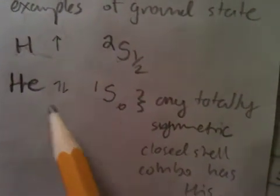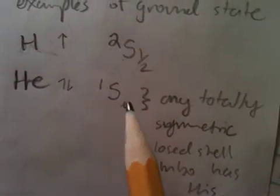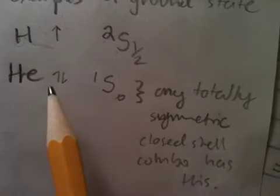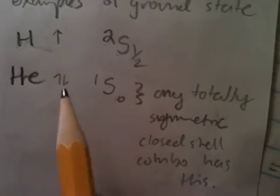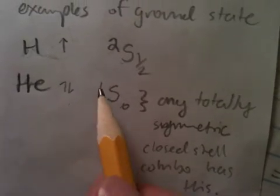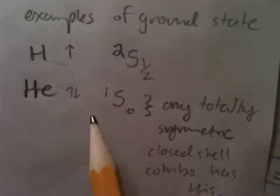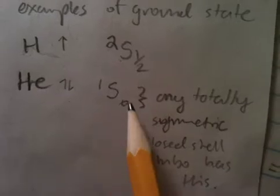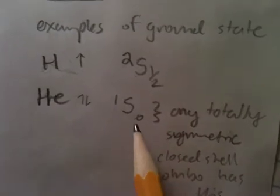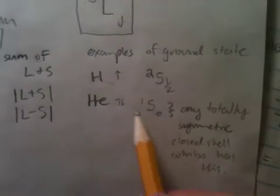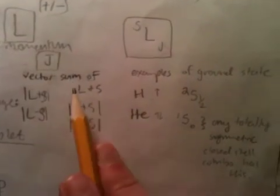Because you do L plus S and L minus S. Then, helium, 2 electrons are paired, so you have no net spin, so you just have 1 for your multiplicity. You still have 1 angular momentum, so that's still S, and then you have 0 for your J vector sum.